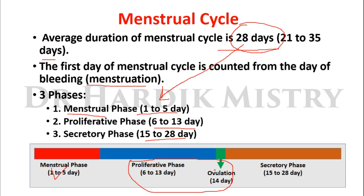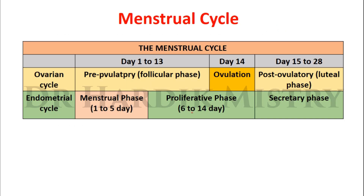The menstrual cycle is also known as the endometrial cycle, as it is specifically related to the uterine endometrium. The proliferative phase continues from day 6 to 14, including ovulation at day 14, and after ovulation it is the secretory phase from day 15 to 28. The proliferative phase is also known as the follicular phase, and the secretory phase is also known as the luteal phase.